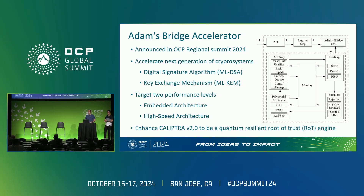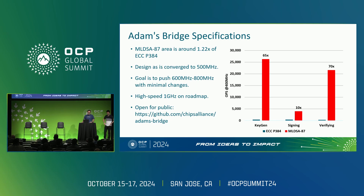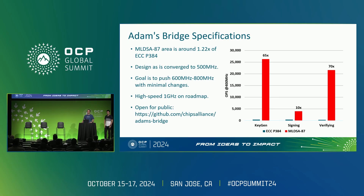The embedded system will be integrated into Calipra 2.0 to make it a quantum-safe root-of-trust engine. From the area and performance specification, we use different optimization techniques to make this PQC engine as small and compact as ECC. Current results show that it is around 1.22x ECC-384. From the performance side, the signing operation — the most time-consuming operation in PQC — is around 10 times faster than ECC.